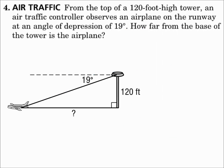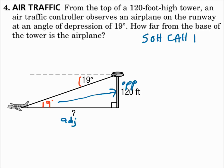Number four: from the top of a 120-foot-high tower, an air traffic controller observes an airplane on the runway at an angle of depression of 19 degrees. How far from the base of the tower is the airplane? The tower is vertical. The distance from the base of the tower to the airplane is horizontal. I have an angle of depression, which is congruent to the angle of elevation, so I can get inside the triangle by moving to the angle of elevation. Identify the sides: the side across from our acute angle is the opposite side, and the leg next to the angle is adjacent. Since I have opposite and adjacent, I'll use tangent.